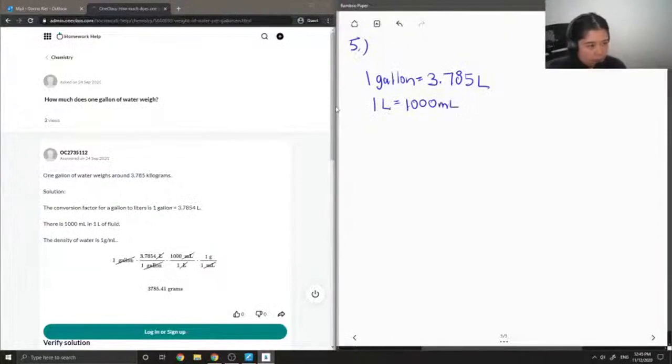What's cool about water is that the density of water is 1 gram per milliliter. So depending on how many milliliters you have, that is the same amount of water in grams.